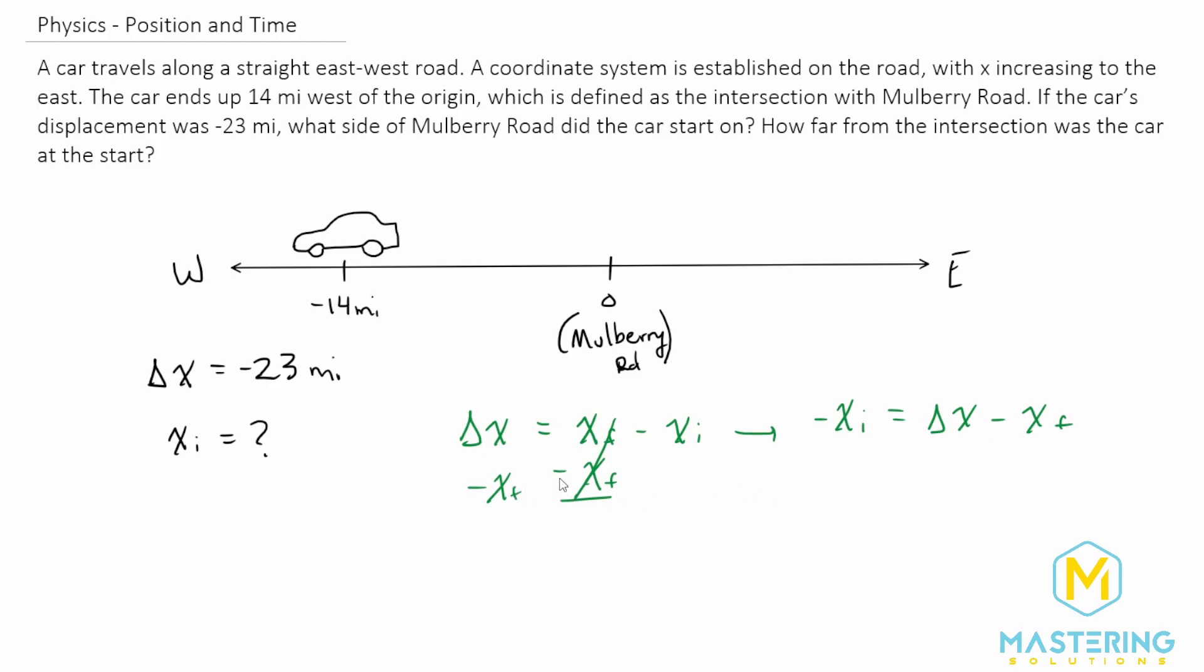We have negative x initial here, and we need positive x initial. So we'll multiply both sides by negative 1. That gives us the final equation: x initial equals x final minus Δx.